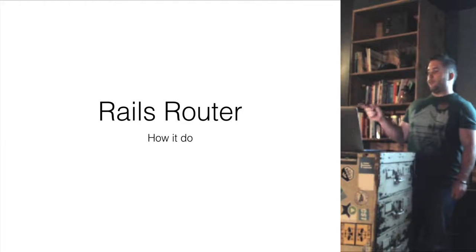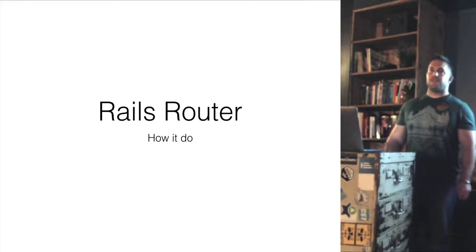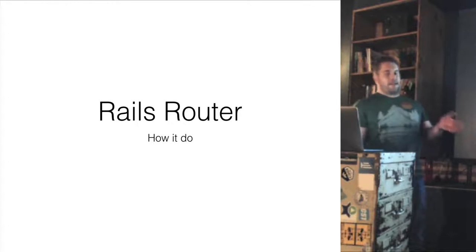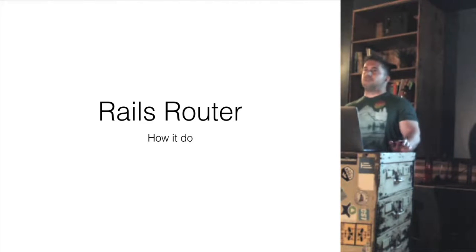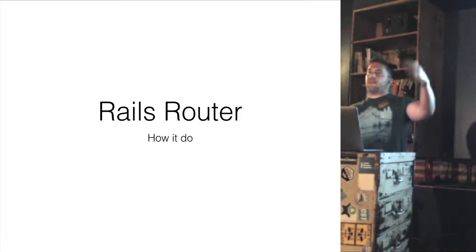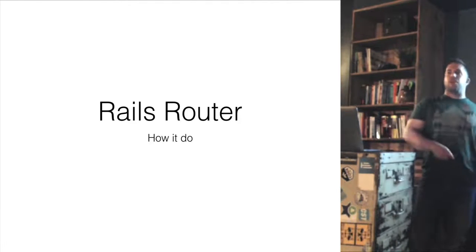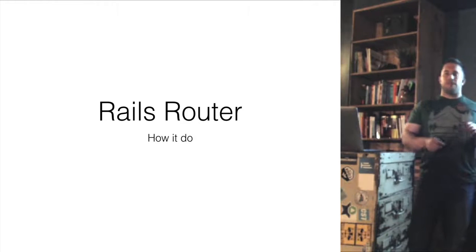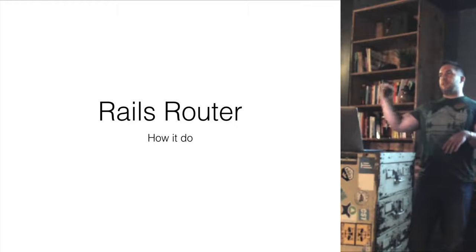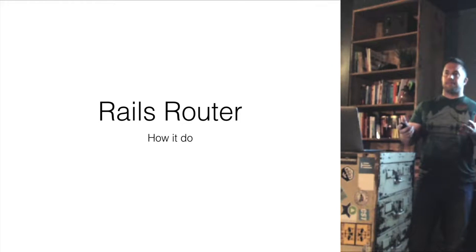Before we talk about how it works, maybe we should cover what it does, because I know a lot of you have not actually touched a Rails app yet, so it would probably be helpful to know what I'm even talking about. In your Rails app there's a thing called the router. You have a routes.rb file and basically it's a collection of all the routes defined for your app. When somebody on the internet makes a request to your website, that URL comes in — like myapp.com/users — and needs to be mapped to one of your existing routes so your app knows what to do with it.